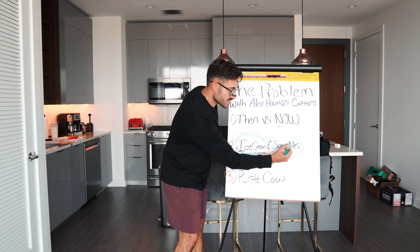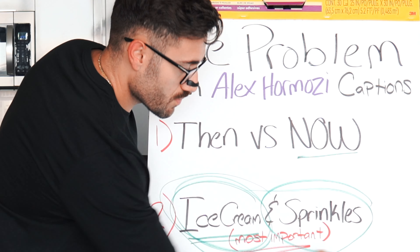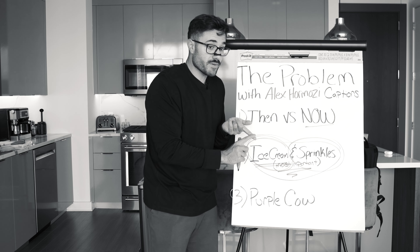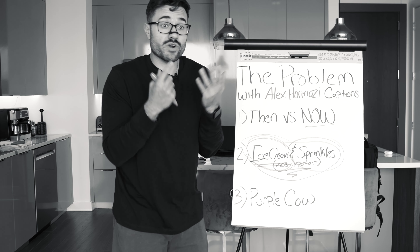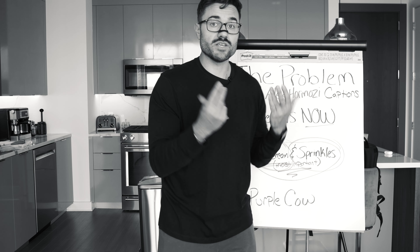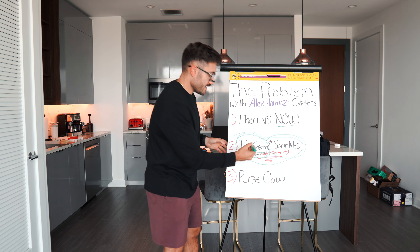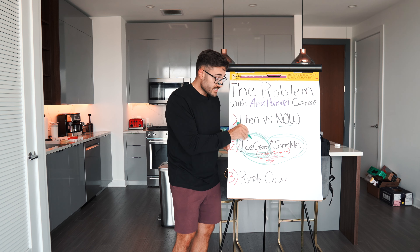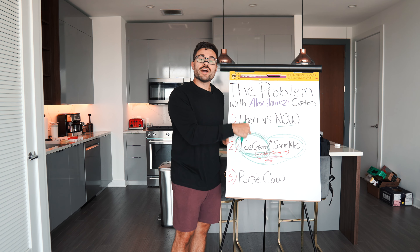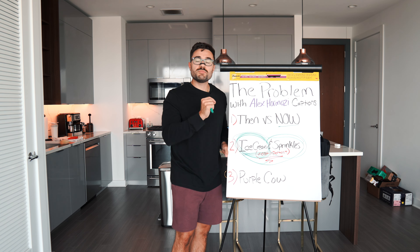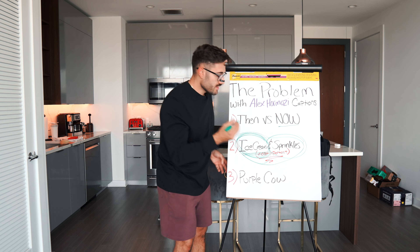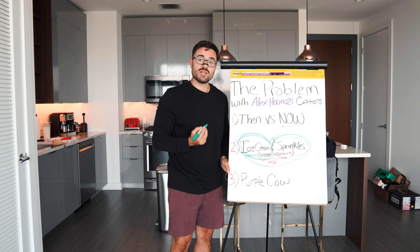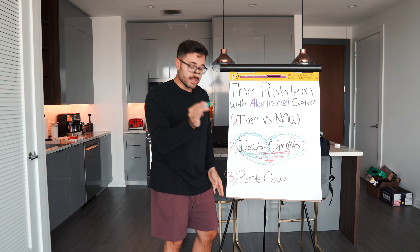Most people focus on the sprinkles, the toppings. What color captions am I gonna use? What font am I gonna use? What trending audio am I gonna use? How many hashtags should I use? But the content itself is not good. This needs to be solid. Your ice cream needs to be the best ice cream possible, so that when you add the toppings, when you add the sprinkles, it only amplifies it.